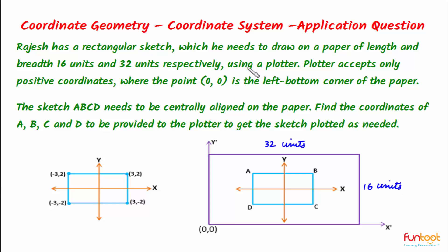And this is to be done using a plotter. The plotter accepts only positive coordinates, where the point (0,0) is the left bottom corner of the paper. So this point here is (0,0), we can call it O dash. The sketch ABCD needs to be centrally aligned on the paper, and here we can see that sketch ABCD is centrally aligned on the paper.